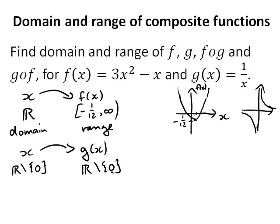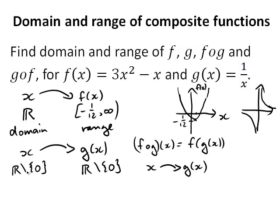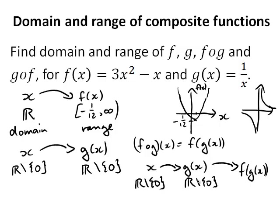We've got domain and range for f and g. Now let's look at f of g. f∘g of x means we first put x into g. What are we allowed to put into g? We can put anything apart from 0. What do we get out? Anything apart from 0. The next step is to put this into f. Since f takes anything, putting any nonzero value into f is fine — we don't have to reduce the domain any further. So the domain of f∘g is ℝ excluding 0.